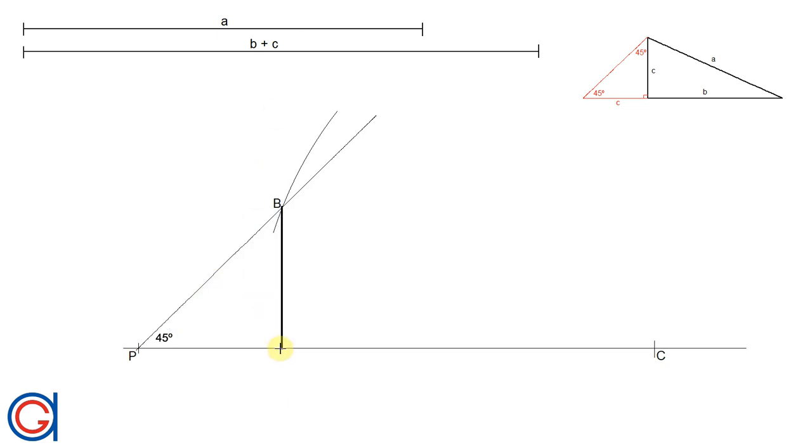And where it cuts the horizontal line PC will be vertex A of the triangle that we want to draw. And now with a thicker line we will join A to C and C to B, and we'll name our sides A, B, and C.